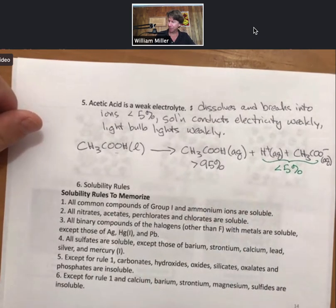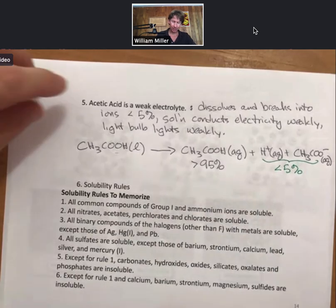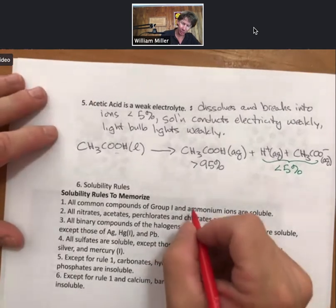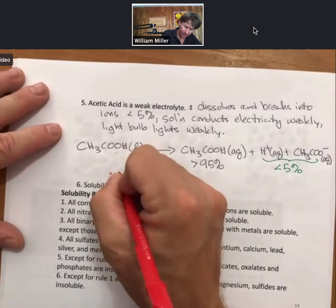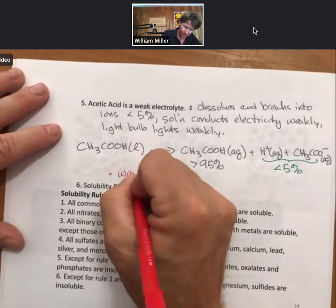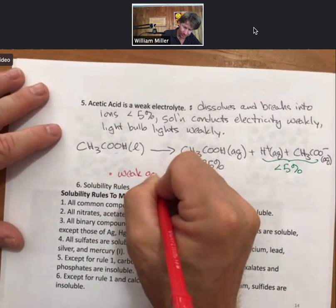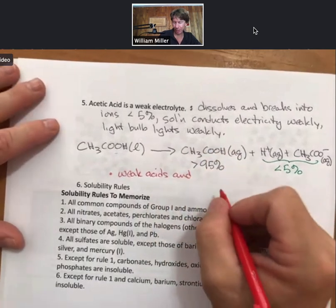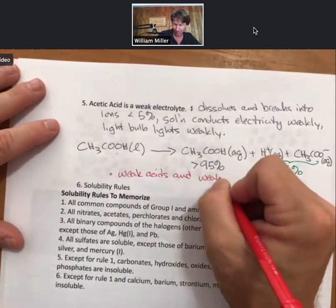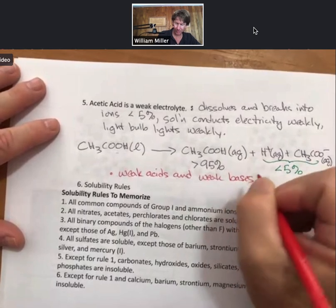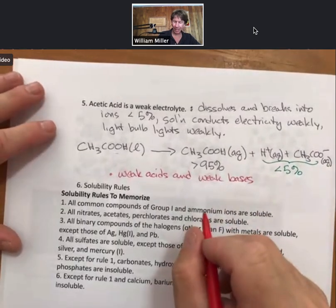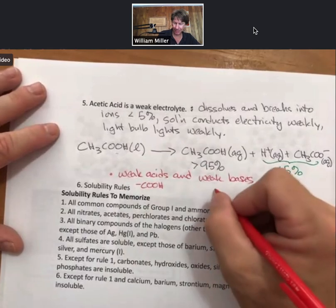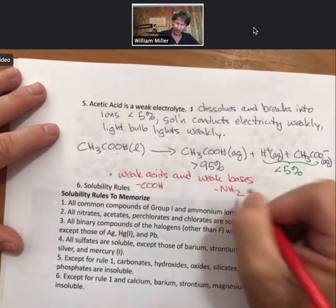Weak electrolytes are weak acids and weak bases. Weak acids have the COOH group and weak bases have the NH₂ group.